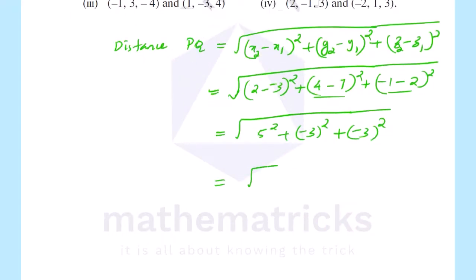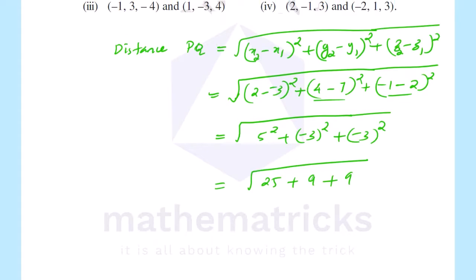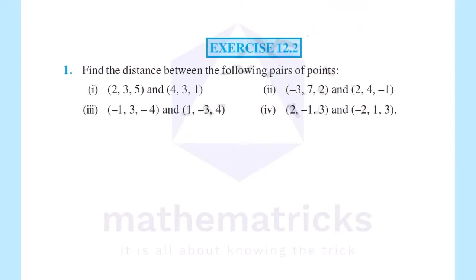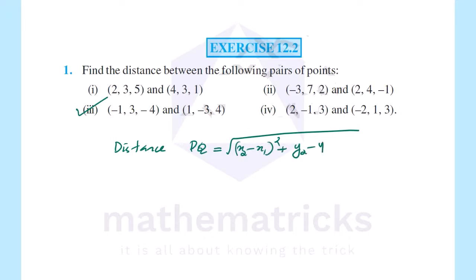That is equal to square root of 5 squared, which is 25, plus minus 3 all square, which is 9, plus minus 3 all square, which is 9. So this is equal to square root of 43.